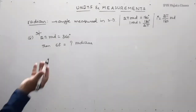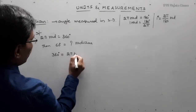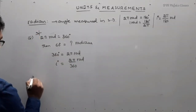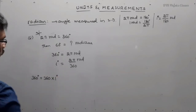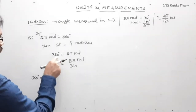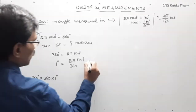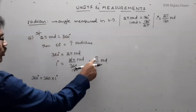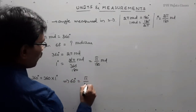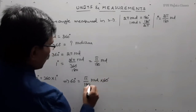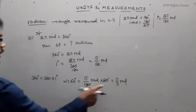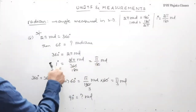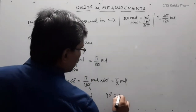If 2 pi radians equals 360 degrees, then 60 degrees equals how many radians? We know 360 degrees equals 2 pi radians. Therefore 1 degree equals 2 pi divided by 360, which equals pi by 180 radians. So 1 degree equals pi by 180 radians, which implies 60 degrees equals pi by 3 radians. Similarly, 90 degrees: multiply both sides by 90, giving pi by 2 radians.